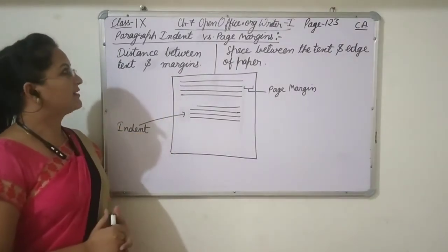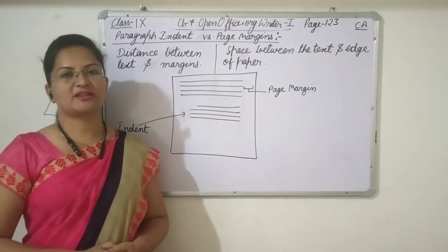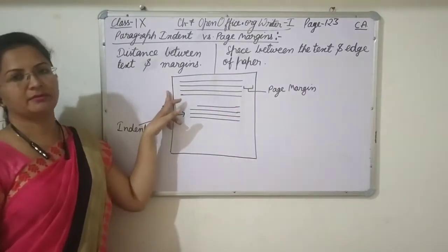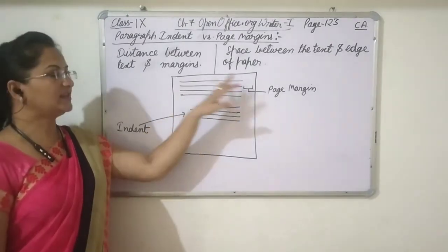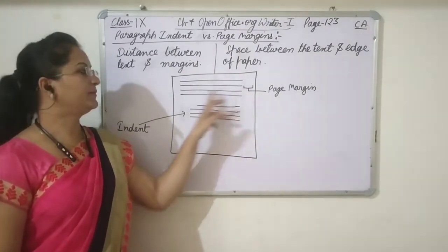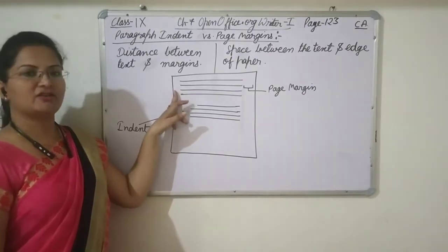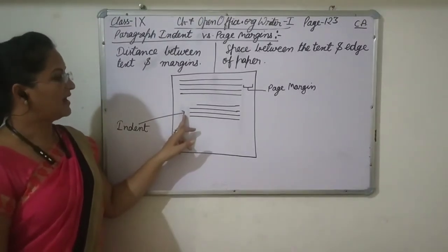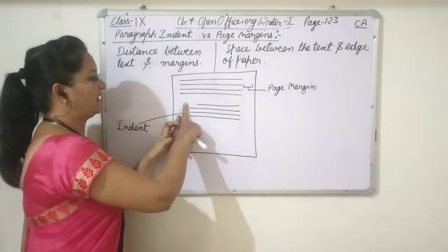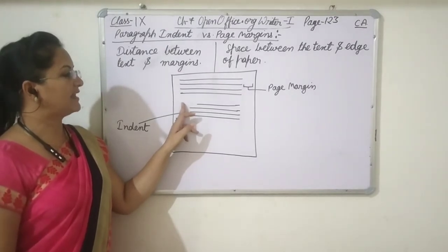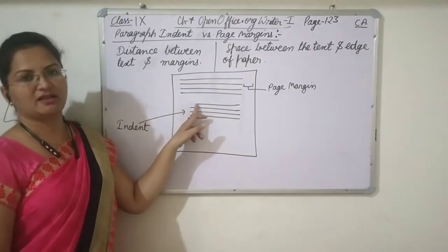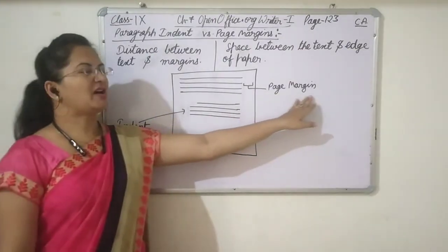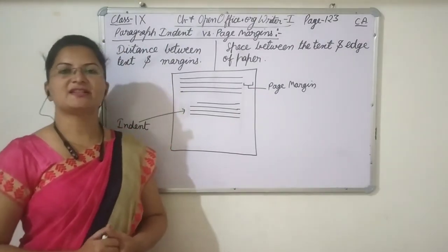Now we will study about paragraph indent versus page margin. Some students get confused between indentation and margin. Margin means the overall gap between the text and the page edge. You can see the space between the text and the right edge of the paper, and the space between the text and the left edge — this is the margin. Indentation is the space between the margin and the text for a specific paragraph, and is different from the page margin which is set for the main text of the entire page. I hope you understood these concepts.